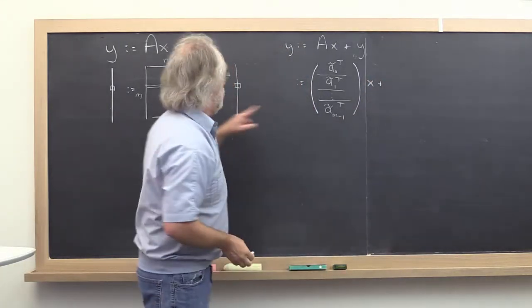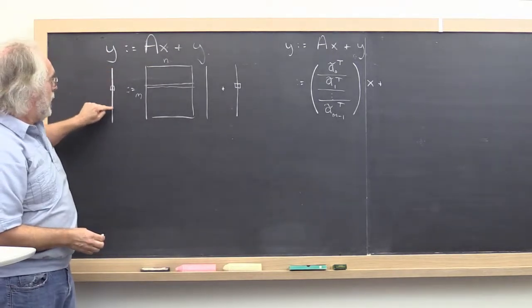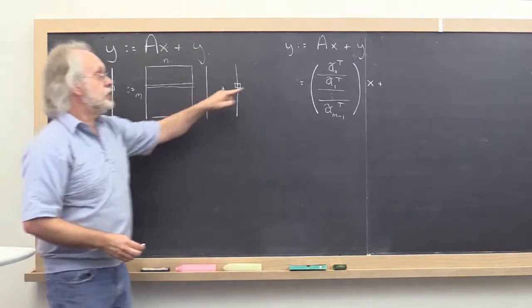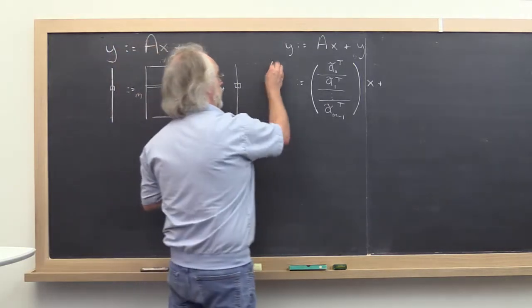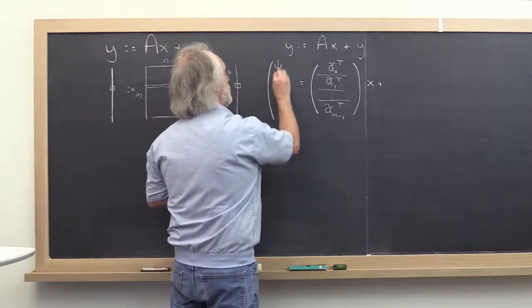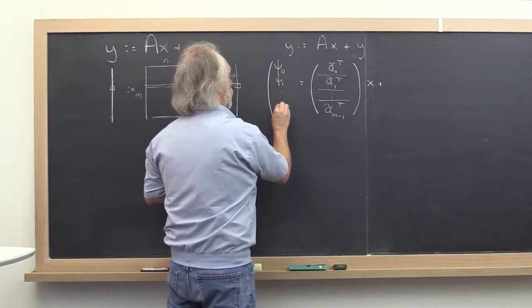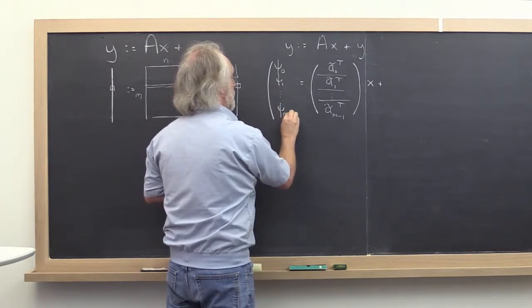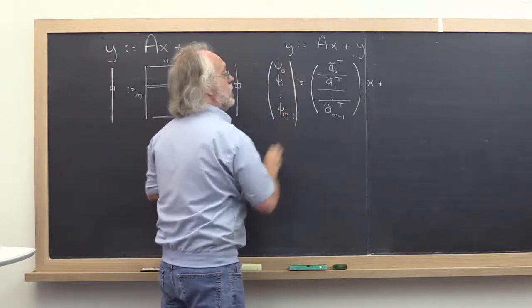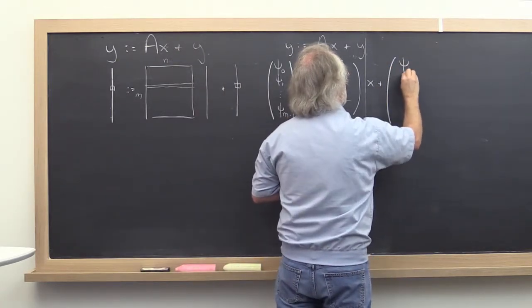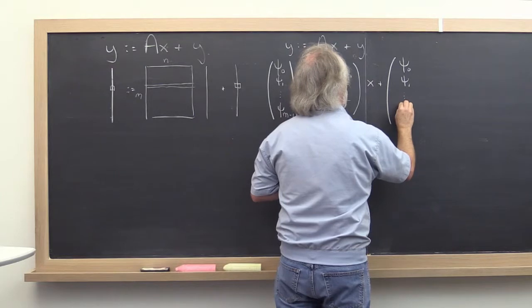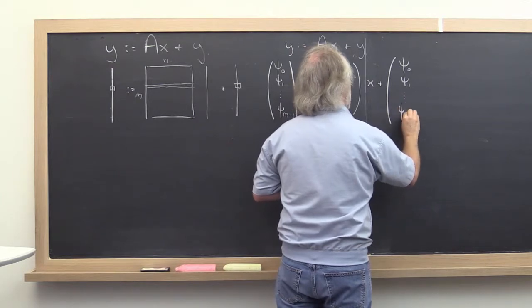Now notice that inherently here we're marching through Y one element at a time. So what we want to do over here is expose those elements of Y: psi 0, psi 1 through psi n minus 1. And this is then added to psi 0, psi 1 through psi n minus 1.